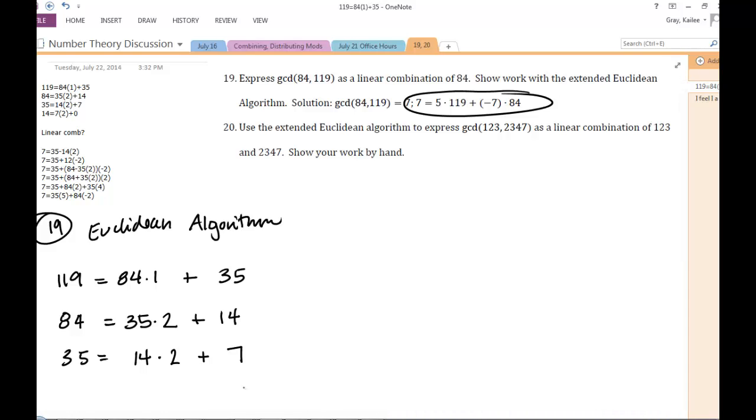The next step is to take this work that you've done to find the greatest common divisor between these two integers 119 and 84, and use that work that you've developed with the Euclidean algorithm to have it tell you how to express that GCD as a linear combination of its two inputs.